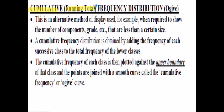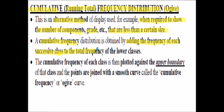We're going to look at a cumulative or running total frequency distribution, sometimes called an OGIF. This is an alternative method of display used when required to show the number of components or grades that are less than a certain value. A cumulative frequency distribution is obtained by adding the frequencies of each successive class to the total frequency of the lower classes. The cumulative frequency of each class is then plotted against the upper class boundary of that class, and the points are joined with a smooth curve to form the cumulative frequency or OGIF curve.